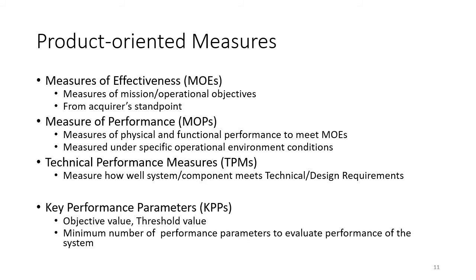Switching from process to product-oriented measures, there are three tiers. The first is the operational mission level, measured in terms of measures of effectiveness (MOEs) — you put the product in the field and measure how well it meets the operational mission requirements. The second tier is measures of performance (MOPs): lab-type measurements where, under specific operational and environmental conditions, you measure the physical and functional performance of the system against its requirements.